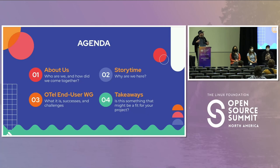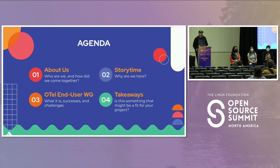So four parts. This is really more of a discussion than a lecture. We're going to talk about our backgrounds, how we got here. We're going to tell you some stories about what we've done as part of Open Telemetry and how we have helped to build community there. Specifically, we're going to focus on the Open Telemetry end user working group. And finally, we're going to give you some takeaways about the values that we think have gotten us to this point.